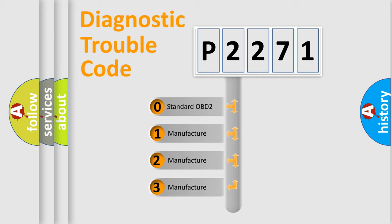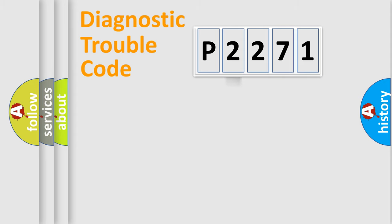If the second character is expressed as zero, it is a standardized error. In the case of numbers 1, 2, or 3, it is a manufacturer-specific error.